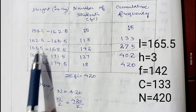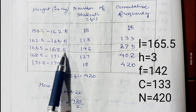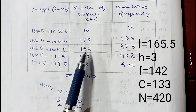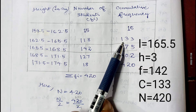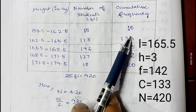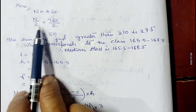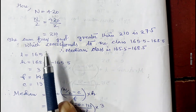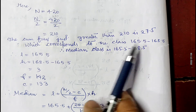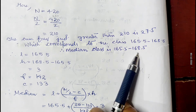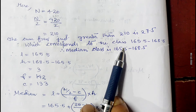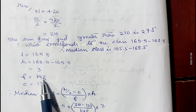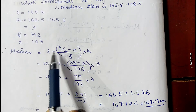Since the median class is 165.5 to 168.5, the lower limit l is 165.5. The width of the class h is 168.5 minus 165.5, which is 3. The frequency of the median class f is 142. The cumulative frequency of the class preceding the median class c is 133. n/2 is 210.